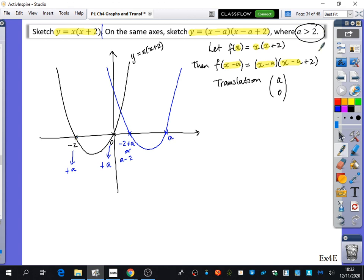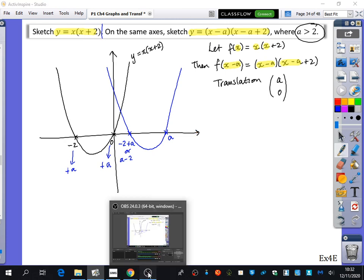Why did they tell us that a was greater than 2? Because then we knew it was going to be on the positive branch of the x-axis. If they didn't tell us that, it could have just shifted a tiny amount. But we wanted to know that it was going to shift all the way to the positive side. So we've got 15 minutes. We're going to do some questions from exercise 4E and we're going to do those on the whiteboards. 4E. Yep.